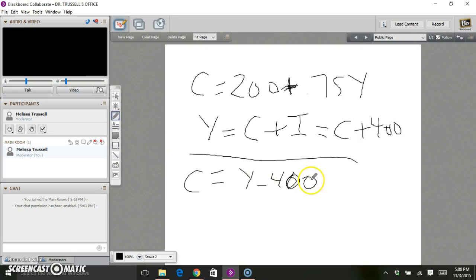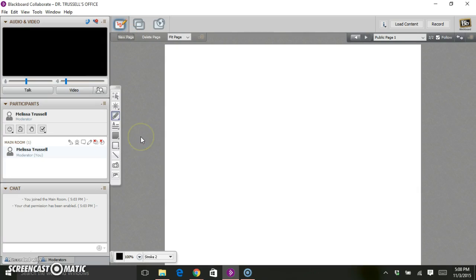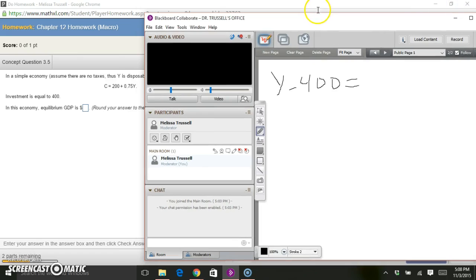Now I can plug this into my original consumption function and then just be able to solve for Y. Let me go to a new page here and plug this in. I know that C is Y minus 400, and from the consumption equation I know that equals 200 plus 0.75Y.